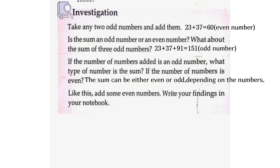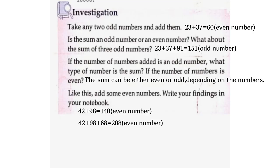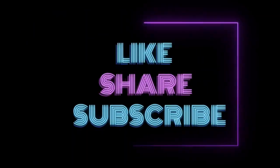When we add two even numbers: 42 plus 98 equals 140 — even. When we add three even numbers: 42 plus 98 plus 68 equals 208 — even. So the sum of any count of even numbers will always be even. Thank you! Please like, share, and subscribe to the channel for more updates.